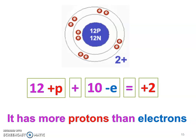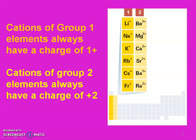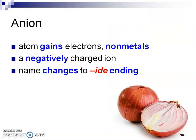12 positives plus 10 negatives gives us that plus two — we have two more protons than electrons. I'm going to show you the pattern: all elements in group one, the alkali metals, have one valence electron and they all have a plus one charge. Group two has two valence electrons; to become a stable cation they lose both, giving a plus two charge.